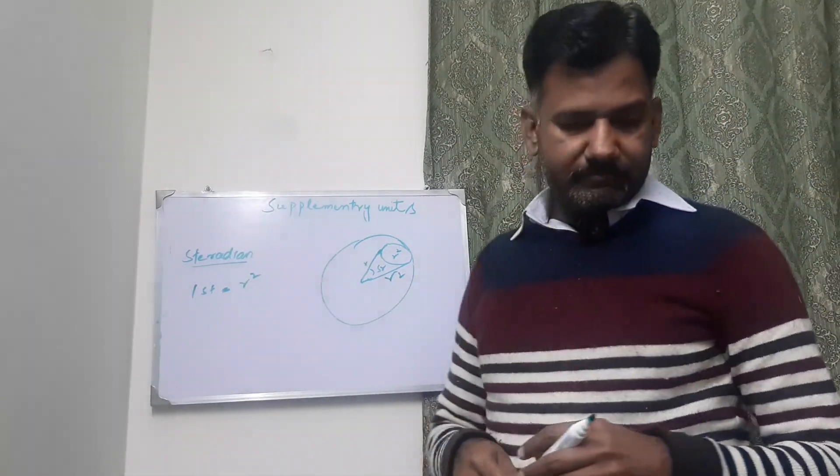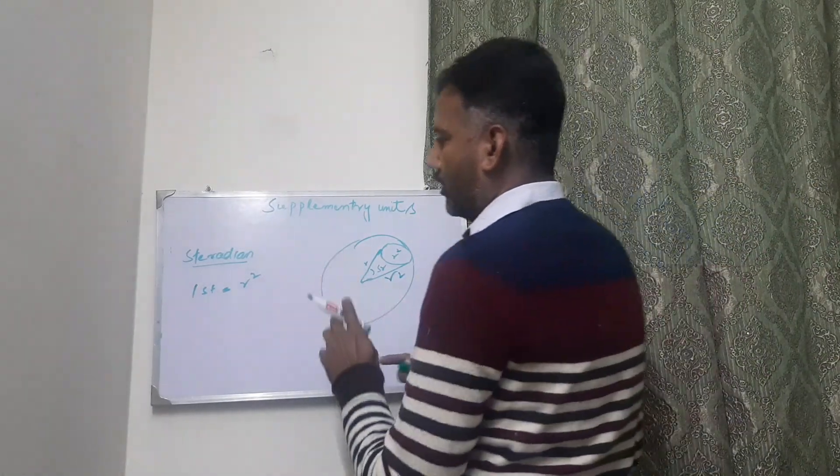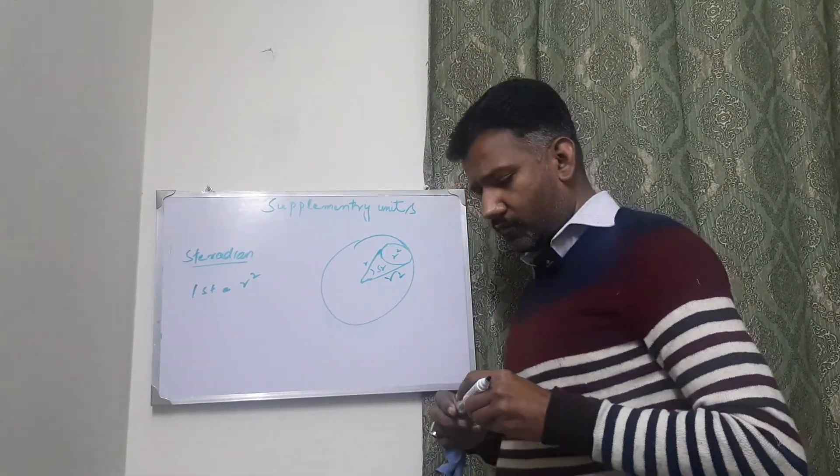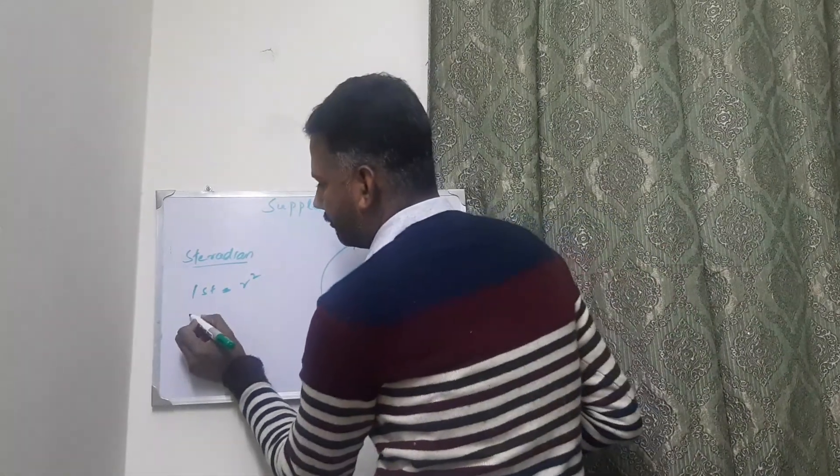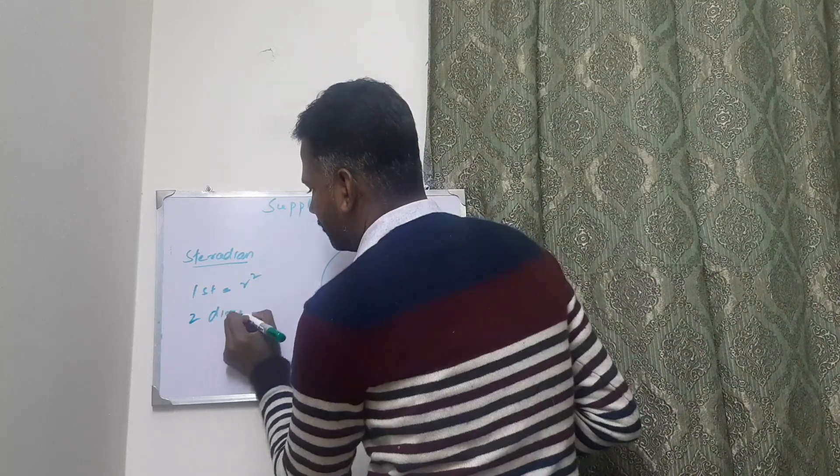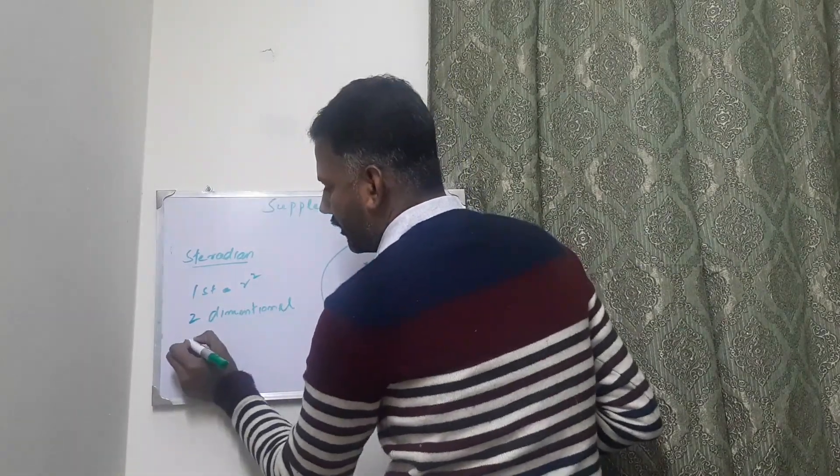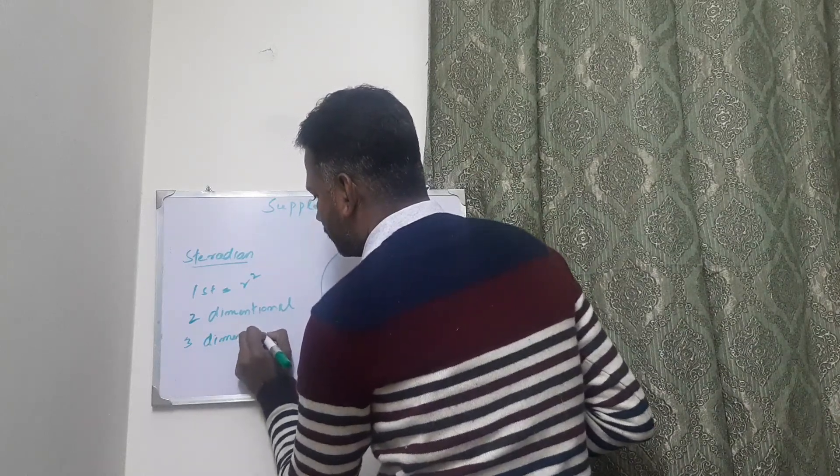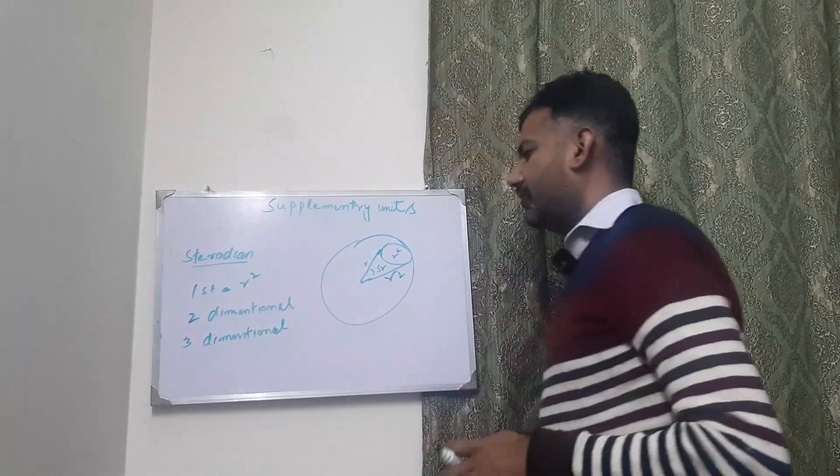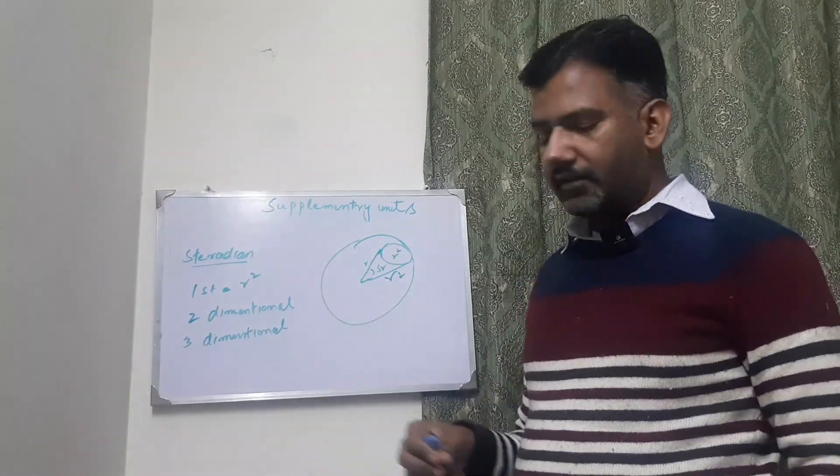It is called square radius. One thing more about plane angle and steradian: we can say that plane angle is in two-dimensional form and steradian is three-dimensional form. That is the main difference between the two. Plane angle is in two dimensions and solid angle or steradian is in three dimensions.